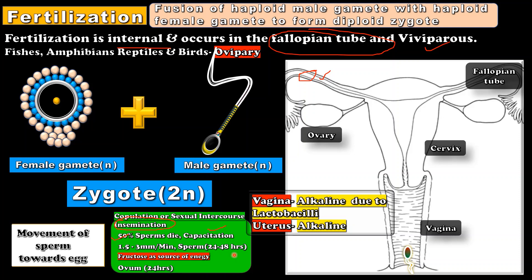The energy for sperm movement comes from fructose present in the semen. Sperms are less active in the vagina due to its acidic nature, created by lactobacilli bacteria, but they are more active in the uterus due to its alkaline nature. After capacitation, sperms reach the fallopian tube in just 5 minutes.